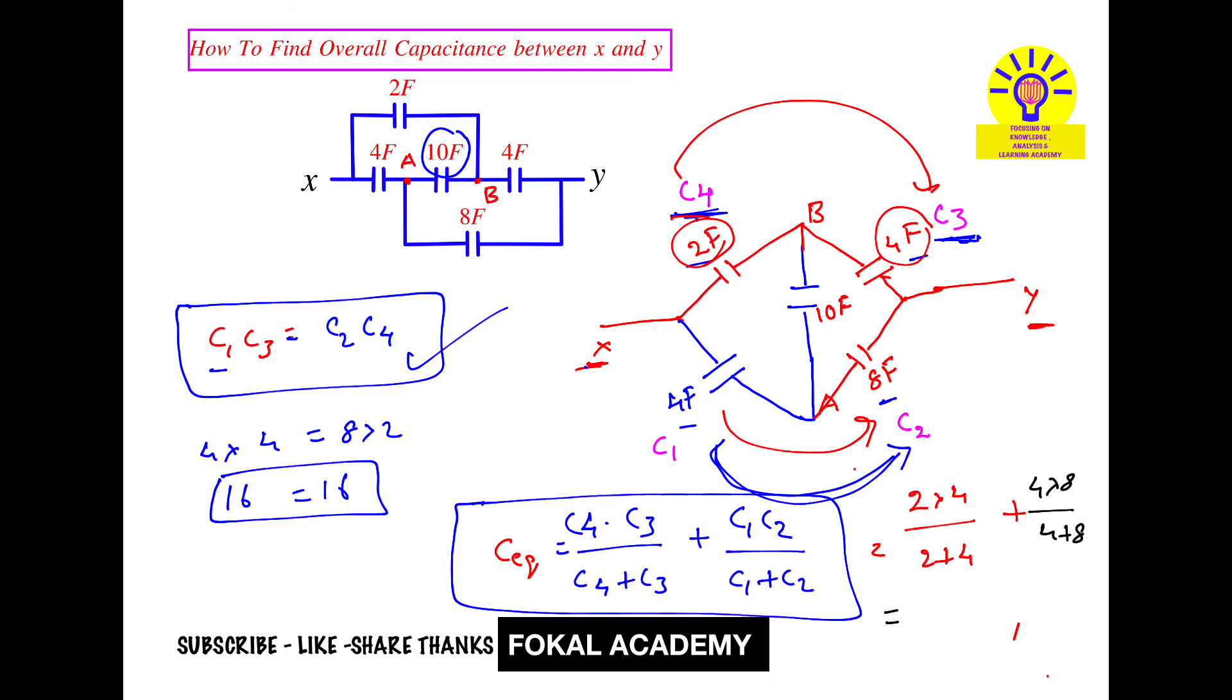So by simplifying this, we will get 4 Faraday. So this is the equivalent capacitance for the given circuit. And this is the process of simplification. Thanks for watching. Please subscribe, like, share, thanks.